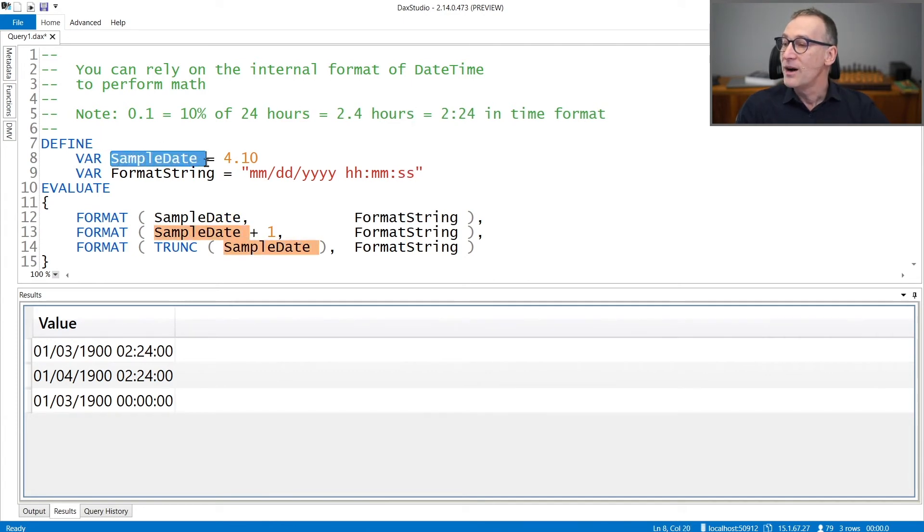I create a variable sampleDate, which is a decimal. It contains 4.10, and then I represent it as a date.